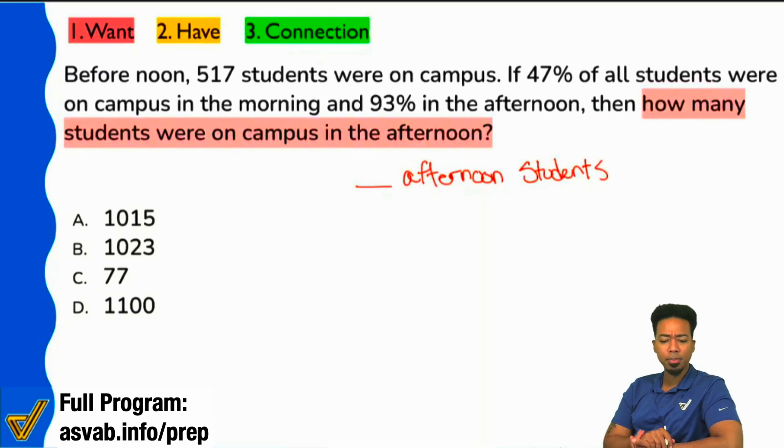I'll just say blank afternoon students. Are we good everybody? Again, that's all we're looking for, the number of afternoon students on campus. Even if you have no idea how to get this done, we still should be able to identify the question. We're looking for the number of students in the afternoon.